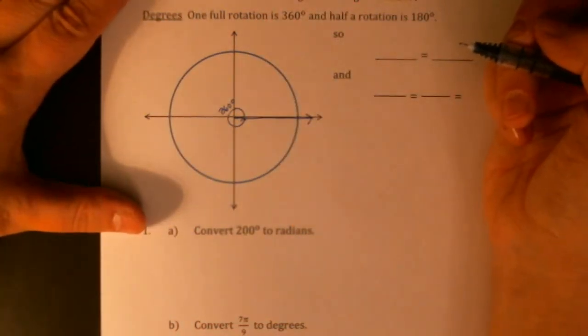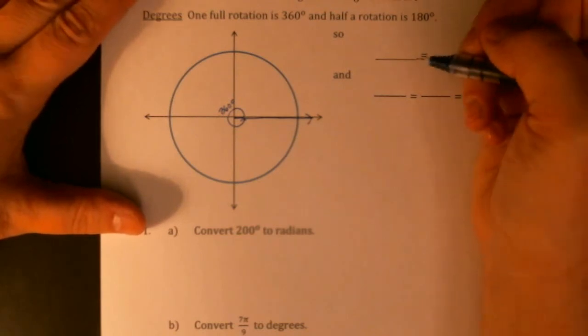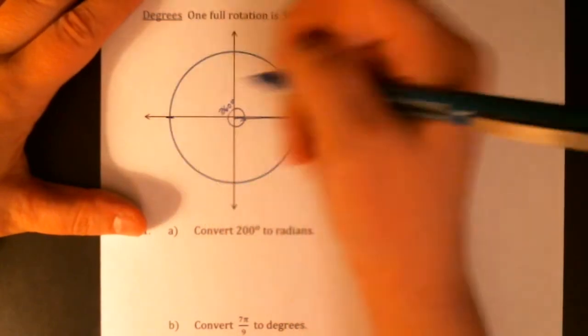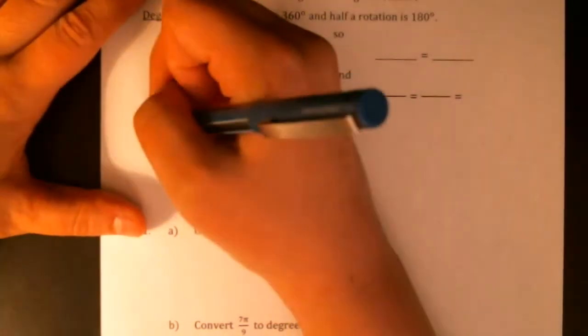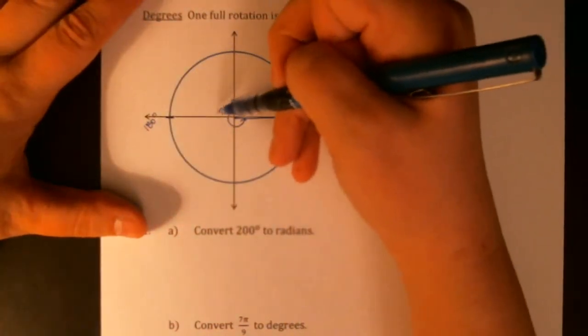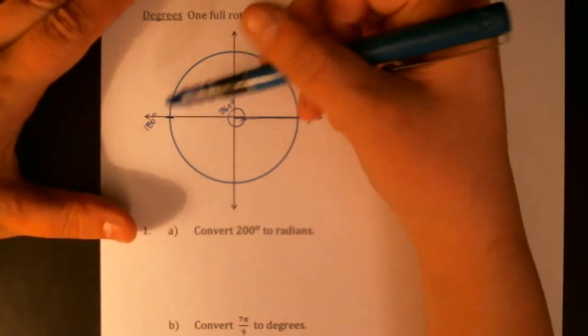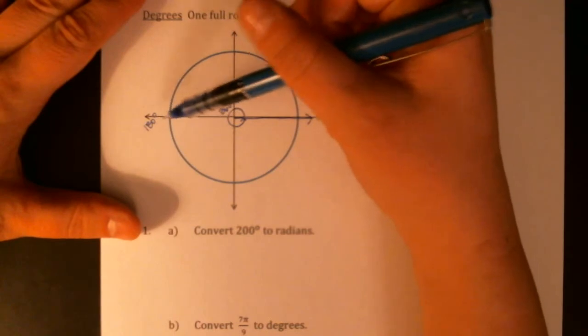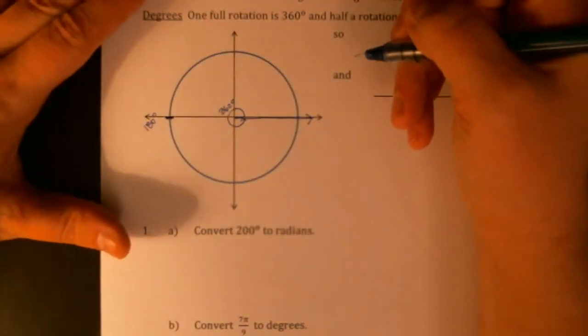If a full rotation is 360 degrees, we can take fractions of that to figure out that halfway around the circle is half of 360 degrees, which is 180 degrees. What I'm really labeling is the angle, the rotation, but so this doesn't get messy I'm just going to mark the direction that would point.